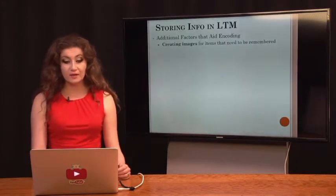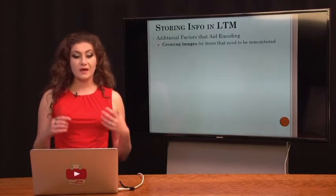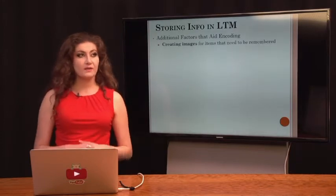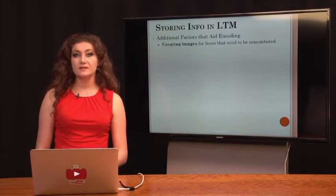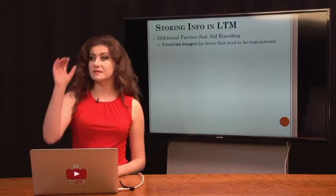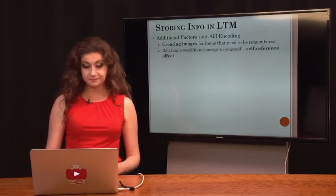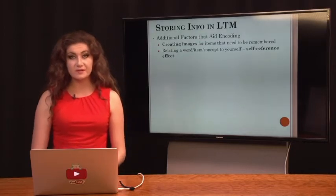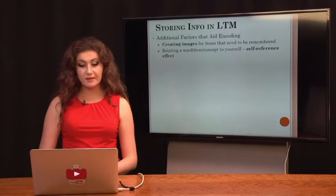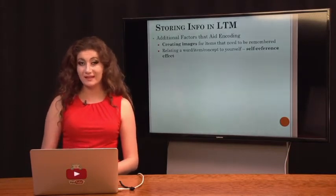Additional factors that help encoding include creating images — things that can be applied to a physical or tangible object are more likely to be remembered. If associating the scientific method with a picture of Harry Potter with a wand helps trigger your memory, use it. Another factor is the self-reference effect: relating a word, item, or concept to yourself. Anytime you apply something you learn to your personal life, it really helps memory because you're personalizing a semantic memory to make it more episodic and emotional.